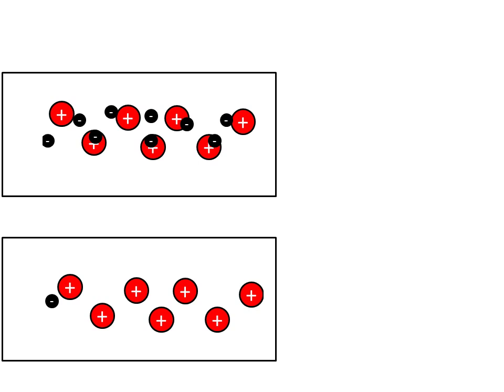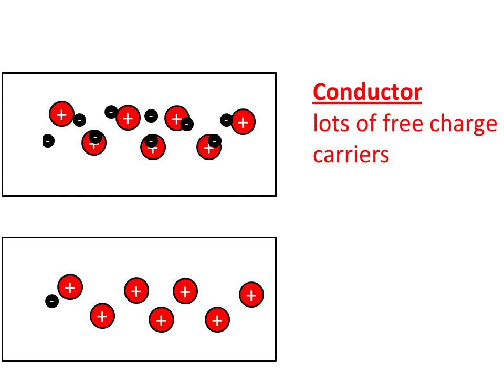Okay, what's the difference between a metal and a non-metal in terms of the drift velocity of the electrons?